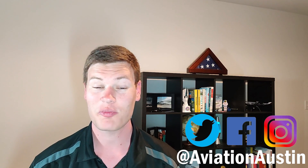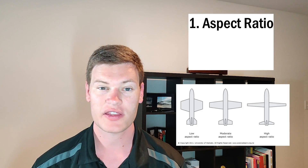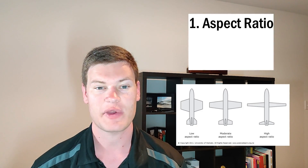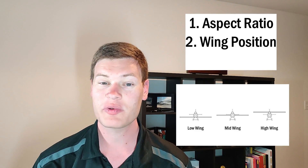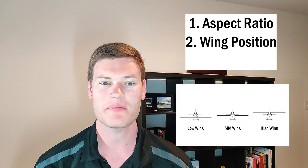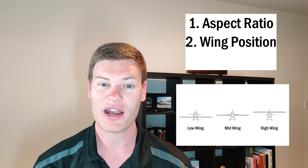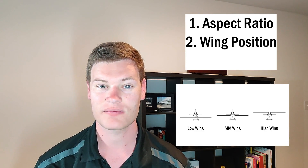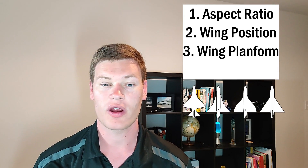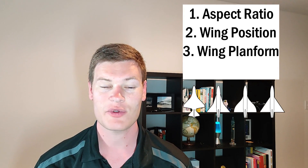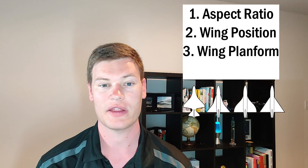In this video I'm going to break down wing design into three different categories. The first being the thickness of the wing, or the aspect ratio. Second, the wing position, or where the wings are mounted on the body of the aircraft. And third, the wing planform, or the wing geometry when you're looking down on the airplane.